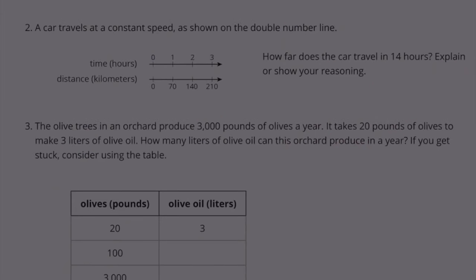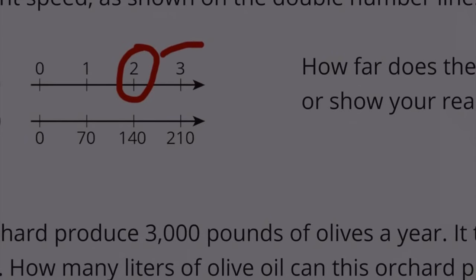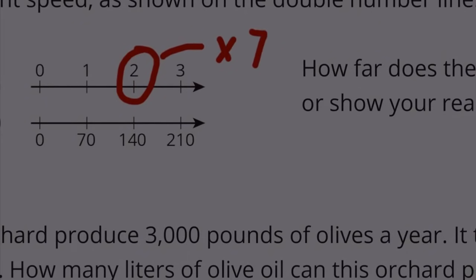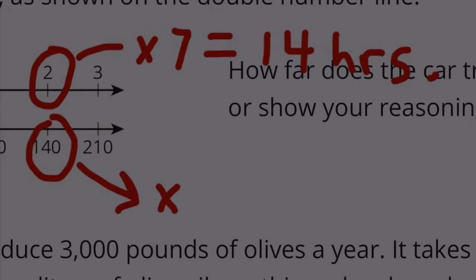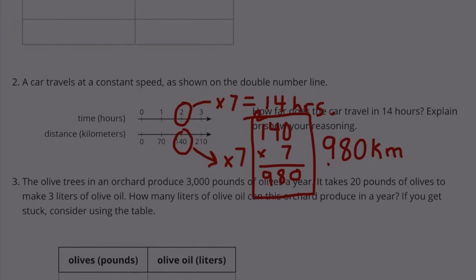Number 2. A car travels at a constant speed as shown on the double number line. How far does the car travel in 14 hours? So we want to know how far the car travels in 14 hours. I know that 2 times 7 gives me 14 hours. Since I multiplied 2 times 7, I have to multiply 140 times 7. 140 times 7 equals 980. The car will travel 980 kilometers in 14 hours.